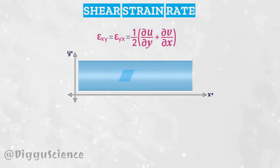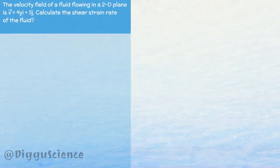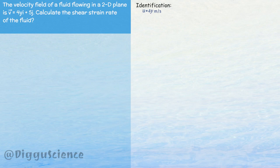The values of u and v can be known from the fluid velocity field. The first stage is identification. The fluid velocity component in the x-direction, u is equal to 4y meters per second. The fluid velocity component in the y-direction, v is equal to 5 meters per second.